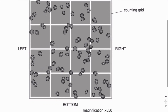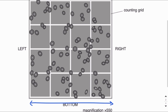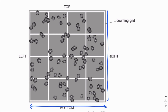After counting the number of cells, you are given the area of the grid. Basically, the examiner will tell you the length and width of the grid, so you multiply length by breadth to find the area. You are also given the depth of the grid, so you can find the volume of the grid. The volume of the grid is then used to find the number of cells per millimeter cube.